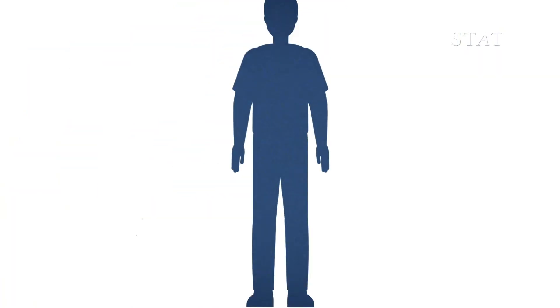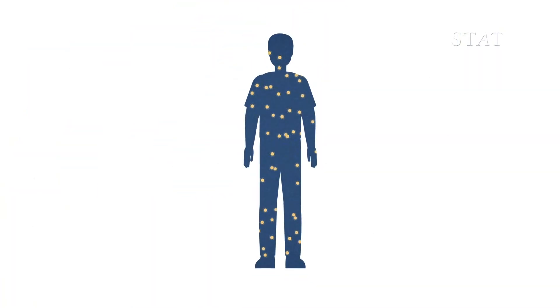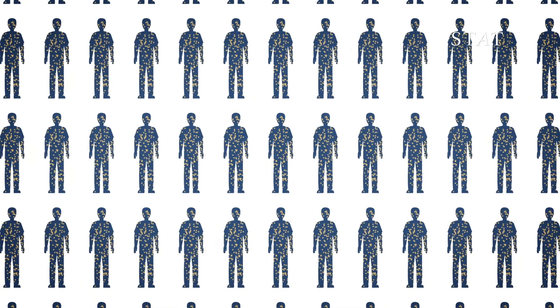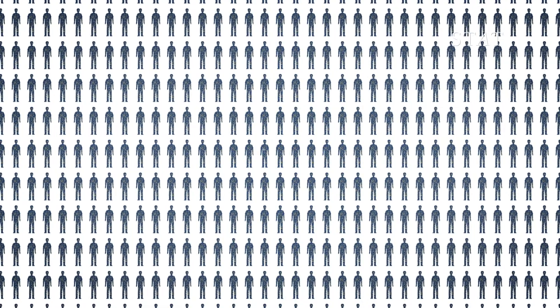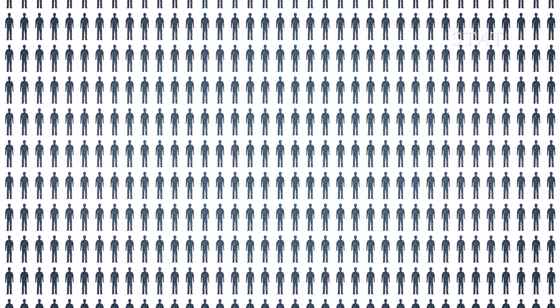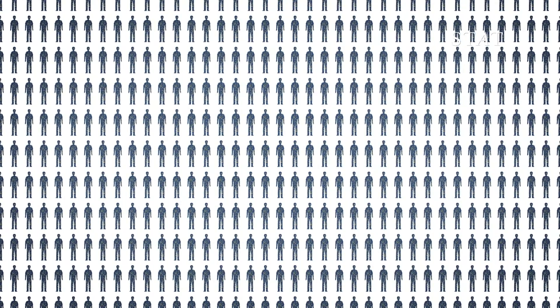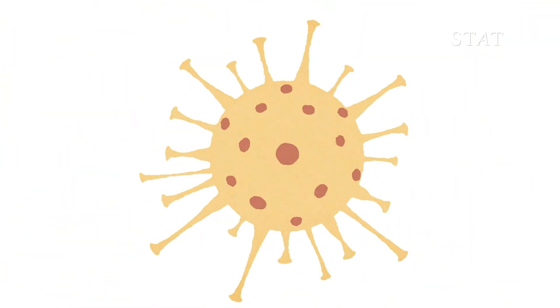But when millions of people all over the world are infected, and the virus is being replicated many, many times, eventually one of these typos in the genetic code can lead to a more significant change, in some cases making the virus more benign. But it can also make the virus more dangerous.